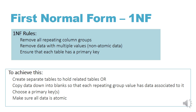Today we're just going to look at the first normal form rules. The first rule is to remove all repeating column groups. Then you need to remove data with multiple values, or non-atomic data — that is data like a whole address where you've got the street name, number and suburb all in one field; that is not atomic. Another example is a name and surname together — that is also non-atomic. You also need to ensure that each table has a primary key. To achieve this, we create separate tables to hold related data, or we copy data down into blanks where there were repeating values, ensuring each repeating group value has data associated with it, then choose a primary key and make sure the data is atomic.